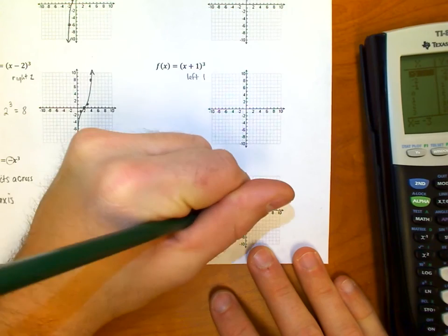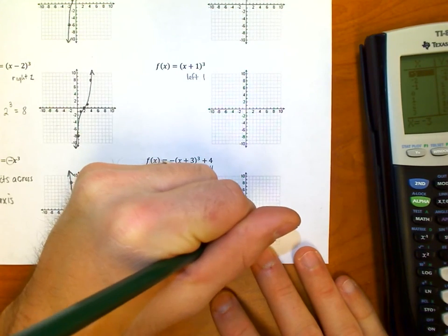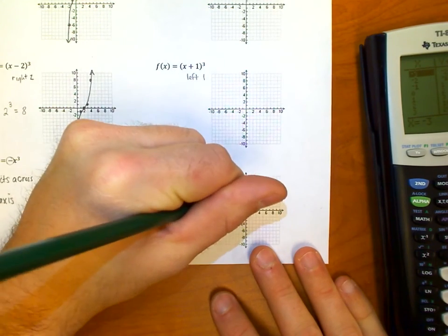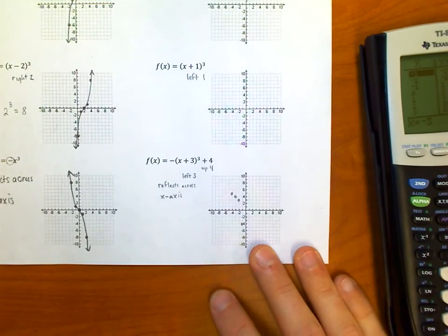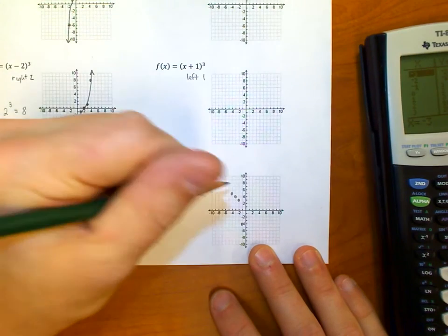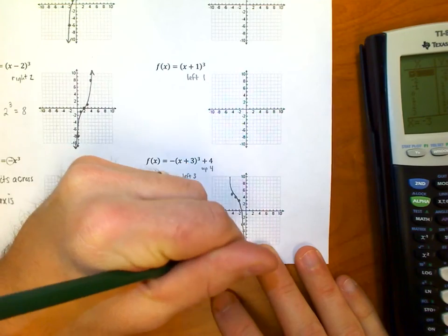And instead of going upward, I'm going to go downward. So over one, down one; over two, down eight; over one, up one; over two, up eight. And I can see the S-curve starting to form. It's going to look something like this.